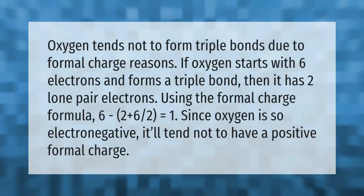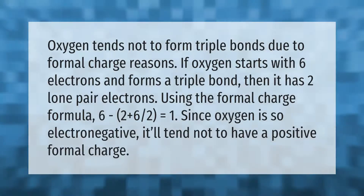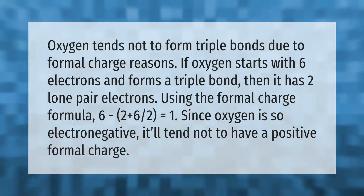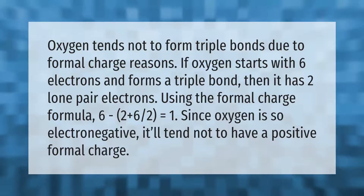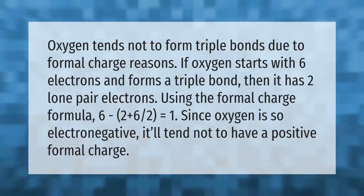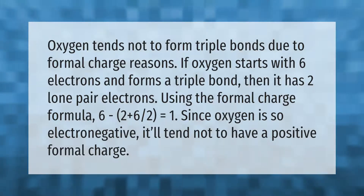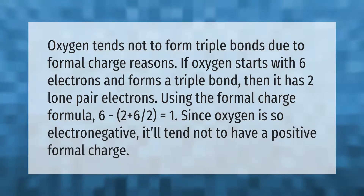Oxygen tends not to form triple bonds due to formal charge reasons. If oxygen starts with six electrons and forms a triple bond, then it has two lone pair electrons. Using the formal charge formula: 6 − 2 + (6/2) = 1. Since oxygen is so electronegative, it tends not to have a positive formal charge.